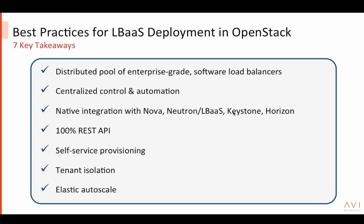What did we see in today's best practices discussion? For production applications deployed in OpenStack, you need an enterprise-grade load balancing and application services solution that is software-based, distributed, multi-tenant, and managed by centralized control for automation. You need native integration with OpenStack services so deployment, provisioning, HA, and configuration are completely automated. You need 100% REST API, self-service provisioning for tenants with isolation and different SLAs — dedicated or shared, with control plane and data plane isolation. And you need a solution that can scale automatically and elastically, bringing the benefits of Amazon ELB into your OpenStack private cloud.